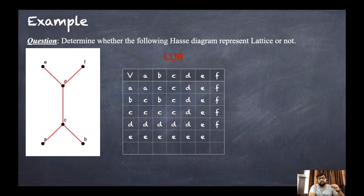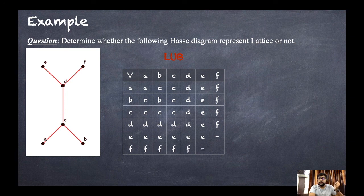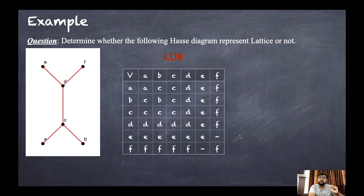Now consider the LUB of e and f. You can see that e and f have no upper points above them, so we cannot find the upper bound — hence it will be dash (null). For the f row: since f is an upper point, all entries will be f, except f and e which is also dash, and f and f is f. So the pair (e, f) does not have a LUB.